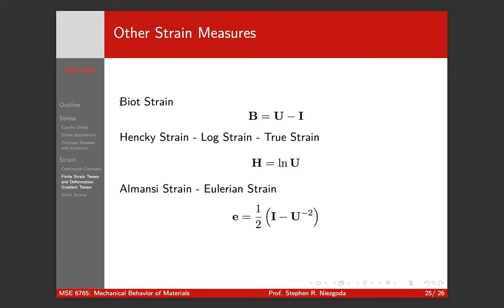The Biot strain: instead of one half U squared minus I, it's just U minus I. The Hencky strain, which is the equivalent of the true strain or the log strain, is just the log, the natural log of our stretch tensor.